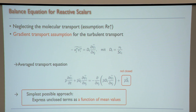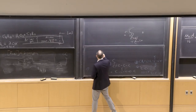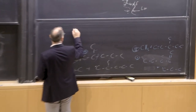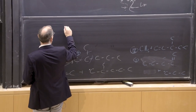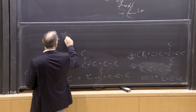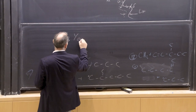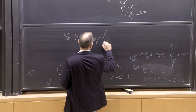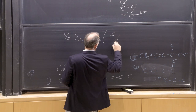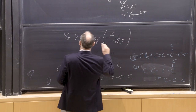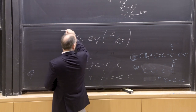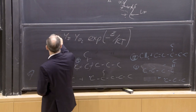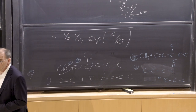The chemical source term, assuming one-step global chemistry, looks something like Y_fuel × Y_oxygen × exp(−E_a/RT), plus some coefficient in front. All of this needs to be averaged.